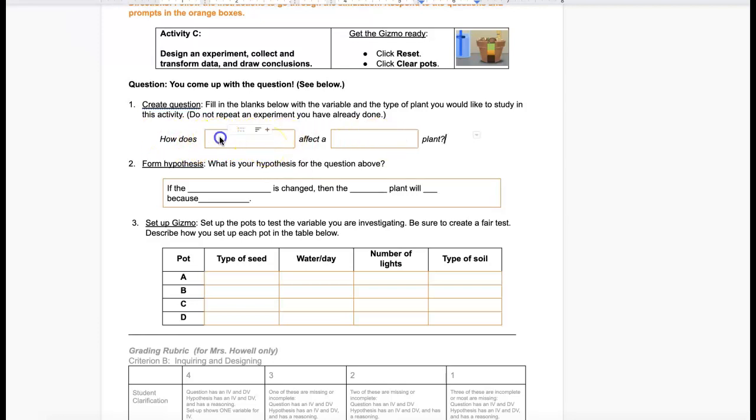An example would be, I will use Activity B. How does the number of lights affect the height of a plant? So that's one example.